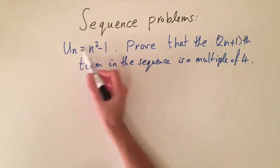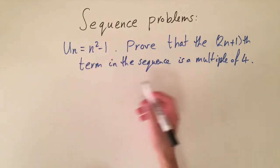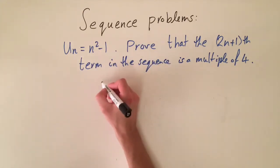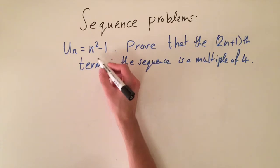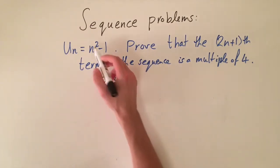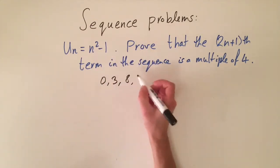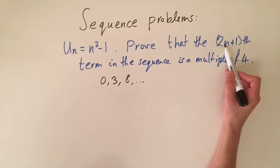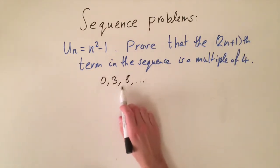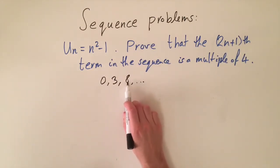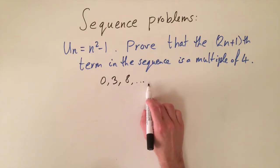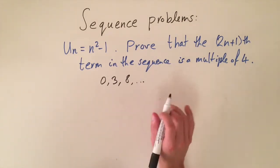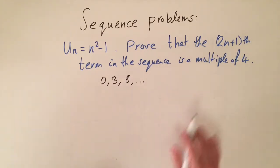The first step is to plug in some numbers into the formula to get a sense of what it looks like. If we plug in n = 1, 2, and 3, we get 0, 3, and 8. We can see that when n = 1, the (2n+1)th term is the third term, which is 8 — a multiple of four. We should see that all following odd-indexed terms are also multiples of four, and we want to prove this.